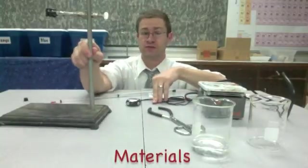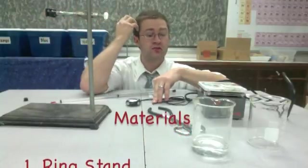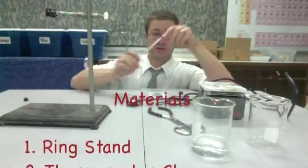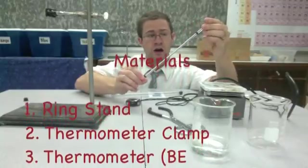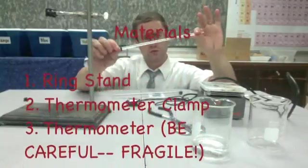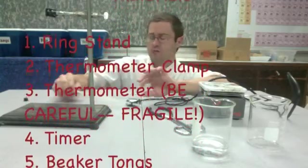You're going to have a ring stand, you're going to have a thermometer clamp. You're also going to have a thermometer, obviously. This is one of your thermometers. They're made of glass and they have some chemicals in them. We don't want to break it so we want to be very careful with them. They have these rubber stoppers and I'll talk about what to do with that in a moment.